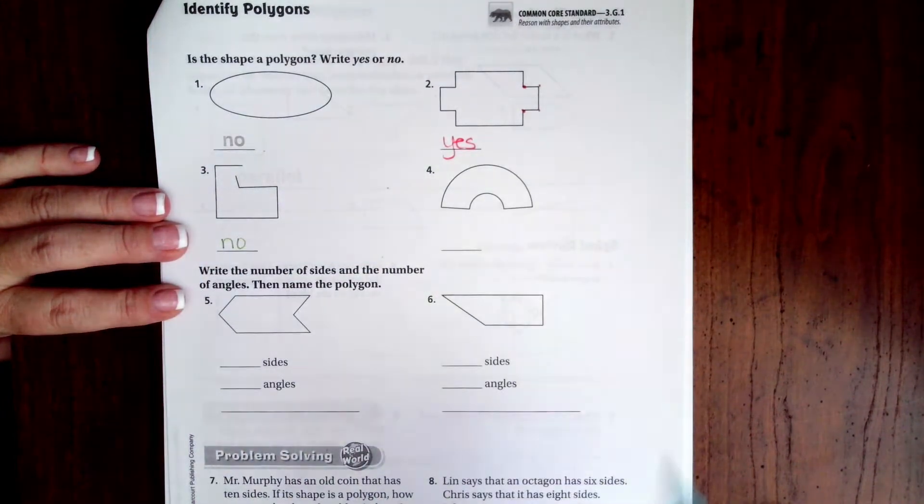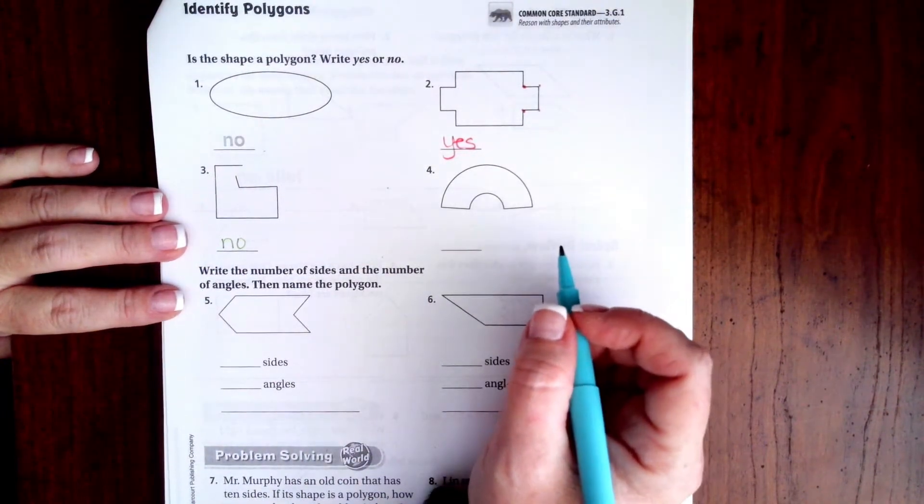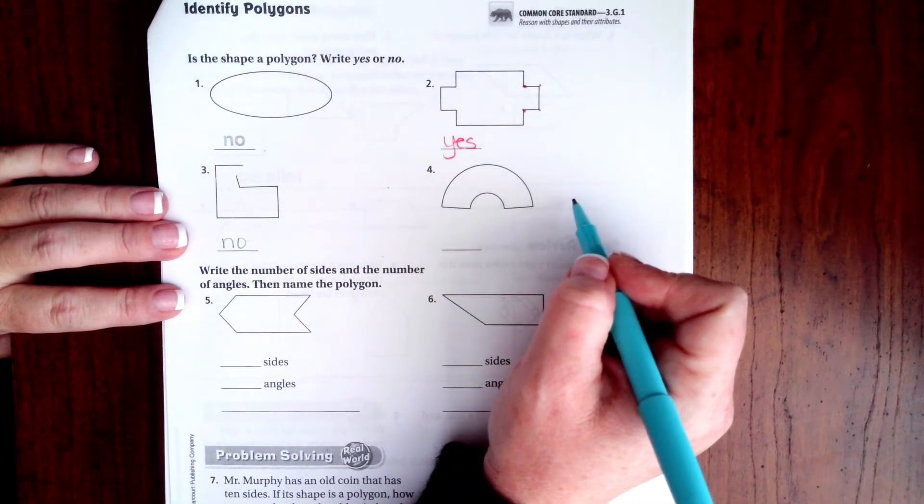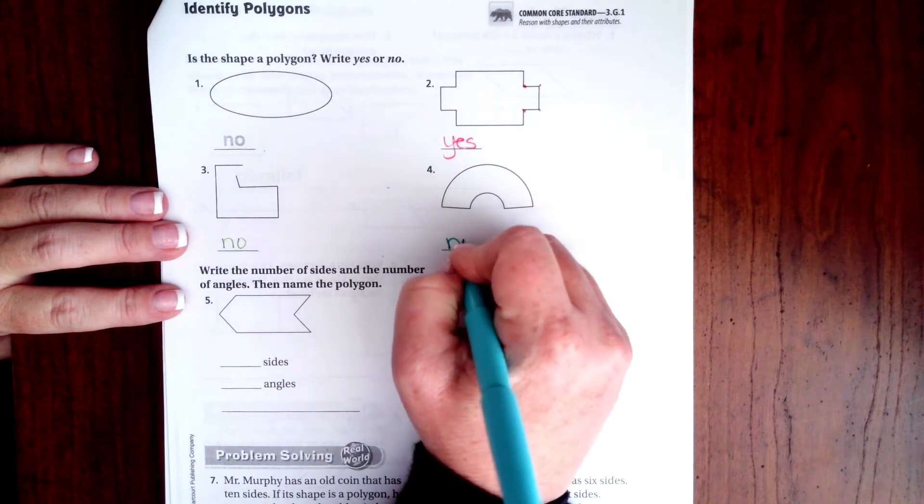And number four, remember it has to have those straight sides that meet at a corner, so this one not so much.